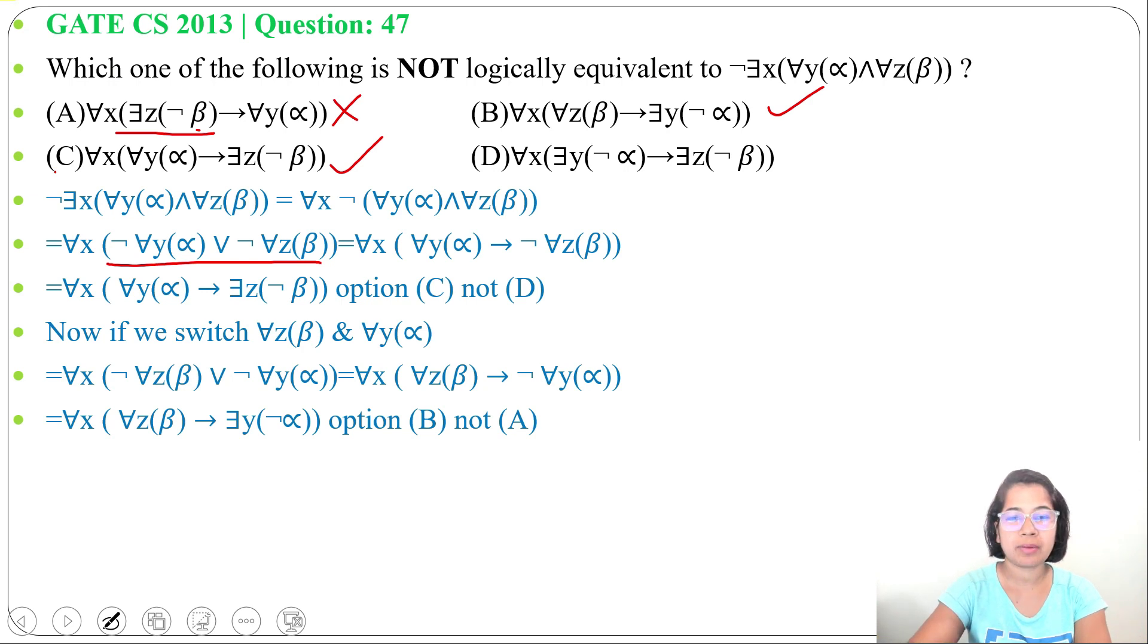While option C and option D are alpha implies beta. So here option B and option C are logically equivalent, while option A and option D are not logically equivalent. Answer will be option A and option D.